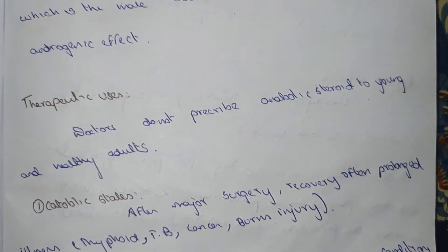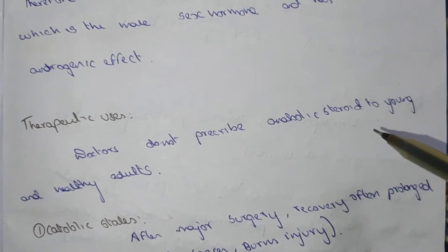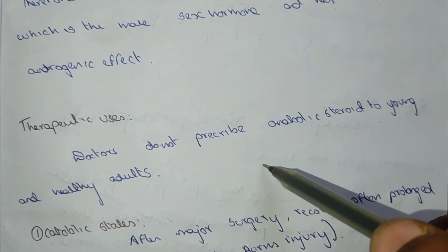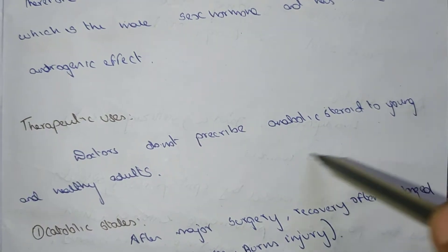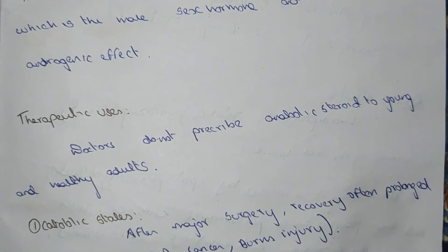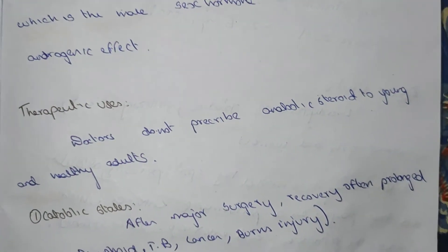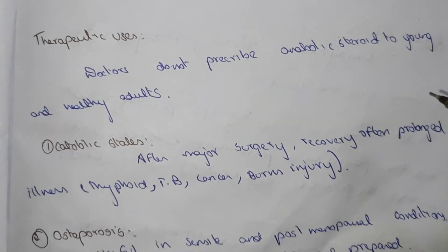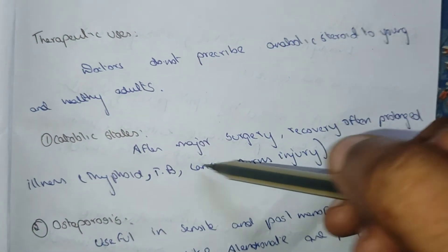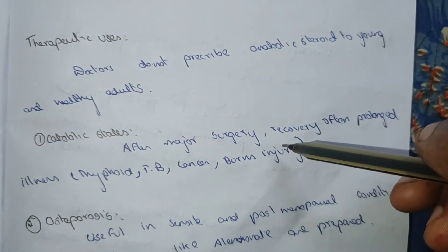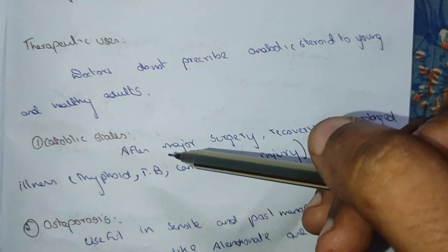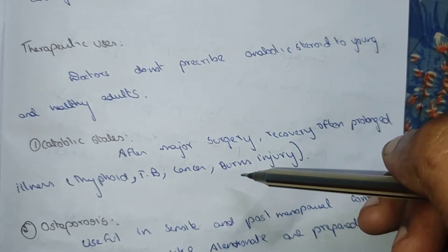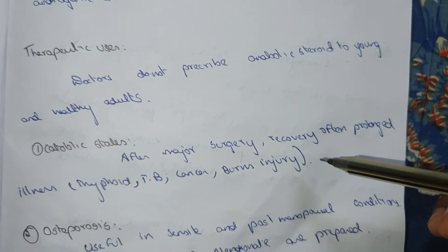Therapeutic uses: doctors do not prescribe anabolic steroids to young and healthy adults. They are prescribed in catabolic states — after major surgery, recovery from prolonged illness like typhoid, TB, tuberculosis, cancer, and burn injury.